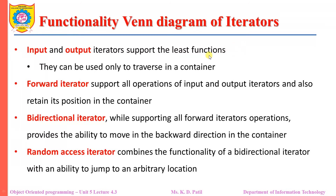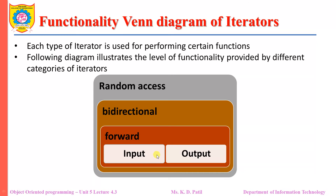The input and output iterators support the least functions — they can be used only to traverse a container. Forward iterators support all the operations of input and output iterators and also retain their position in the container. The bidirectional iterator, while supporting all forward iterator operations, provides the ability to move in the backward direction. The random access iterator combines the functionality of bidirectional iterator with an ability to jump to an arbitrary location. So moving from inside to outside, the functionality increases.